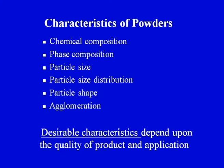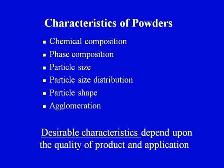Every raw material should possess some desirable characteristics. The important characteristics of powders include: chemical composition, phase composition, particle size, particle size distribution, particle shape, and agglomeration of the particles. These are some of the important characteristics that will define the quality of the final ceramic product.